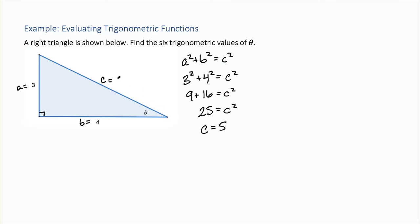Now we know all three sides of the triangle. We are finding the trigonometric functions of angle theta, so we label the sides relative to this angle. We have the hypotenuse, and then relative to angle theta, over here is the opposite and here is the adjacent. Now we're ready to find those six trigonometric functions.